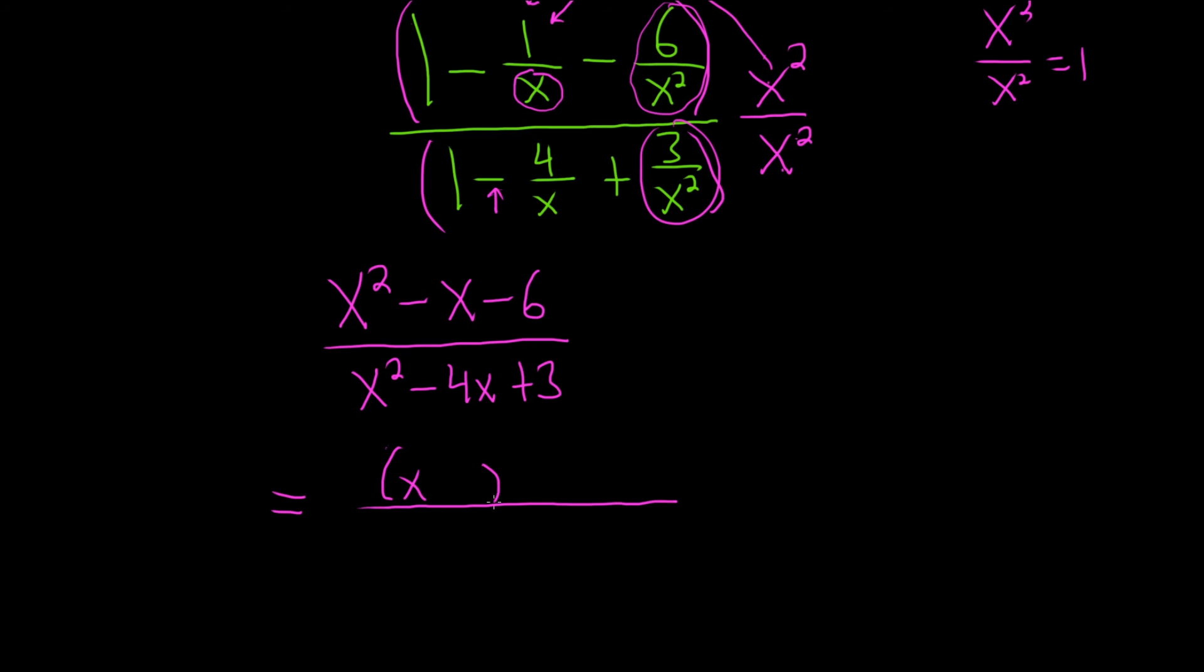So I'm going to go ahead and do this. I have not done this problem yet, so I'm doing it now as I do the video. We need two numbers that multiply to negative 6 and add to negative 1. So I think 3 and 2 will do it. And the 3 has to be negative, because if you add negative 3 plus 2, you'll get negative 1. And negative 3 times 2 is negative 6.